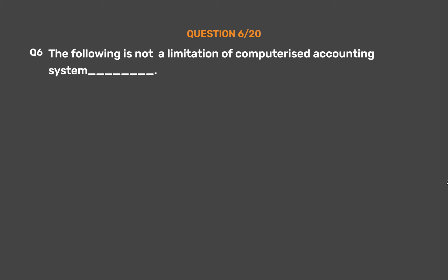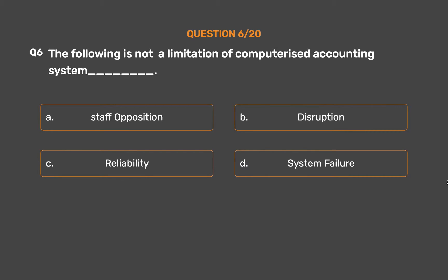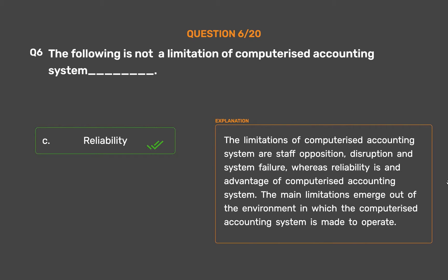Question number 6. The following is not a limitation of computerized accounting system — underscore. Option A: Staff opposition. Option B: Disruption. Option C: Reliability. Option D: System failure. The correct answer is Option C — Reliability. The limitations of computerized accounting system are staff opposition, disruption, and system failure, whereas reliability is an advantage of computerized accounting system. The main limitations emerge out of the environment in which the computerized accounting system is made to operate.